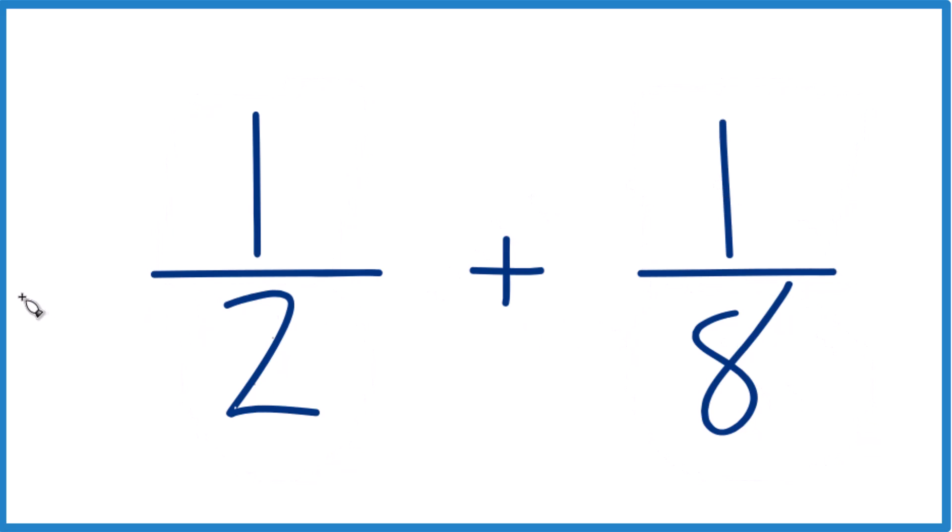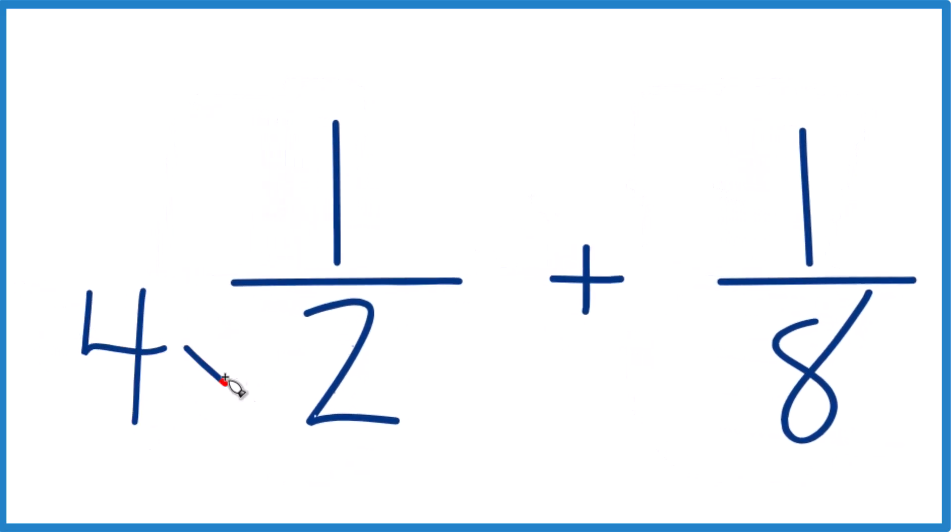So why don't we do this? How about four times two? That equals eight. Then we'd have eight on the bottom.